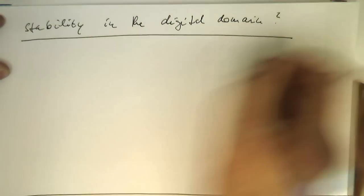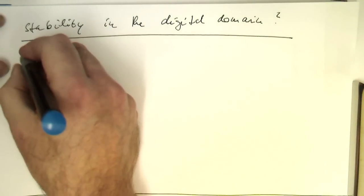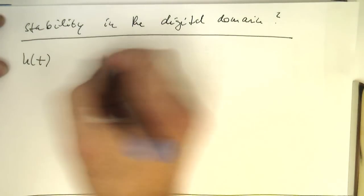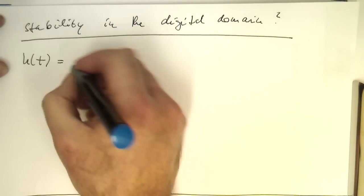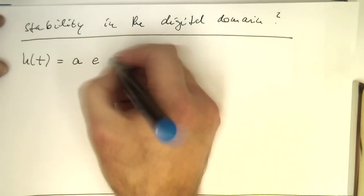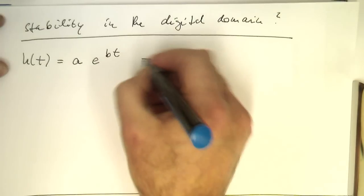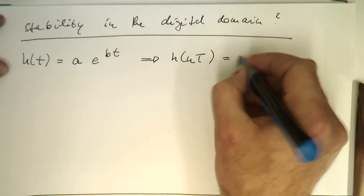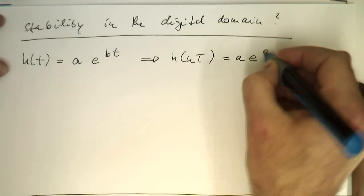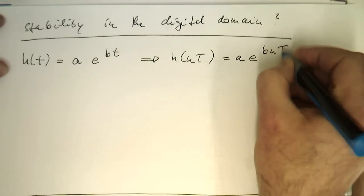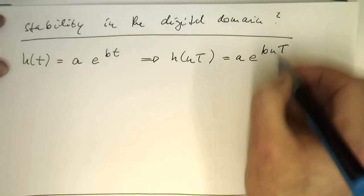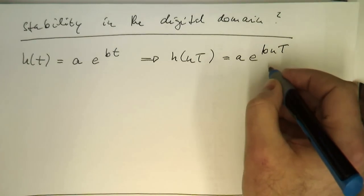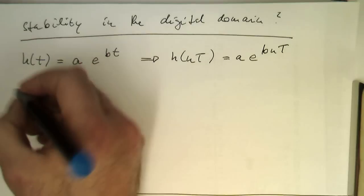There our translation rules coming quite handy. Our h of t, a e to bt. If we translate this, then obviously this is h of nT, a e to bnT. The same will apply for the b here. If the b is negative, we're getting exponential decay. So there's no surprises here.